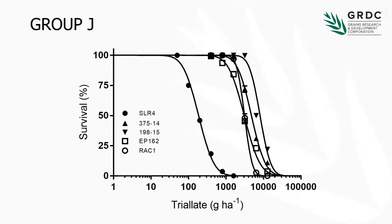The same for triolate, and what's interesting to note here is there are very consistent levels of resistance within the group Js. The susceptible control is here, and again we're needing up around 6,000 to 8,000 grams of AI to control 50% of these populations.